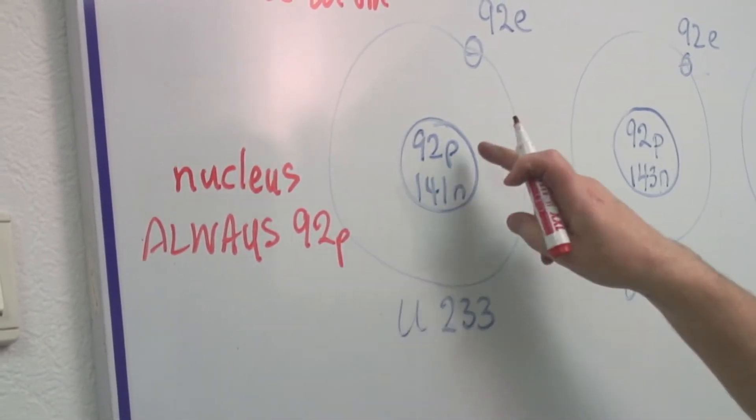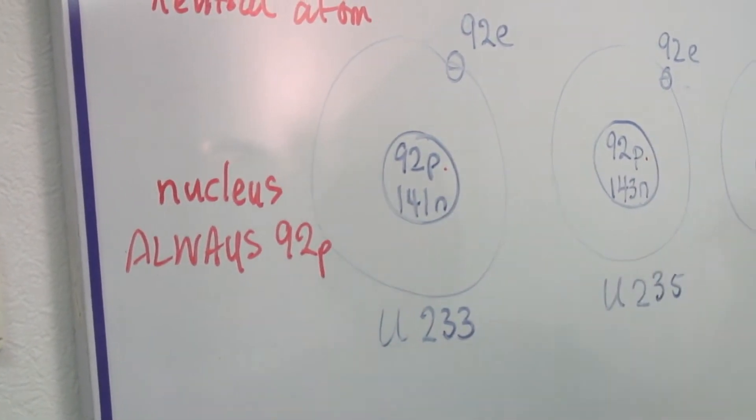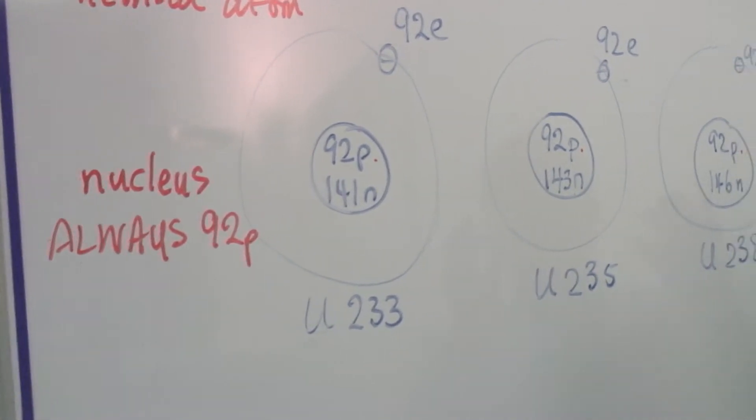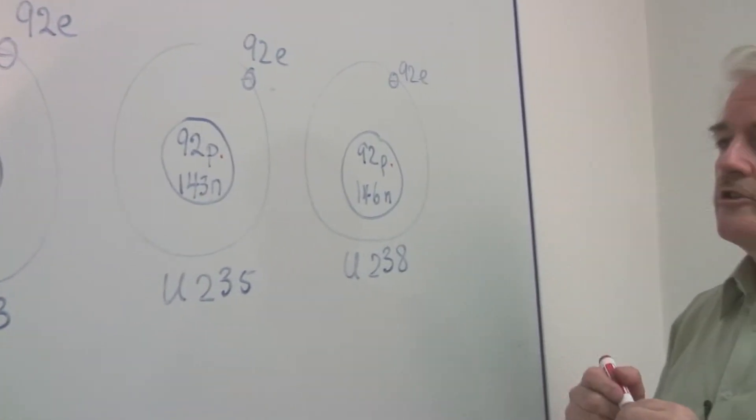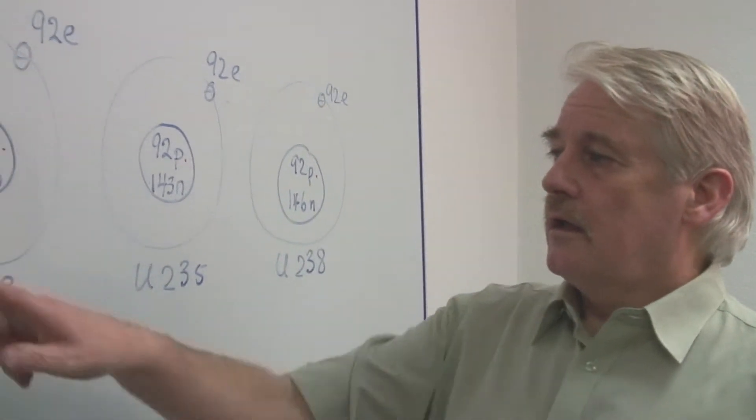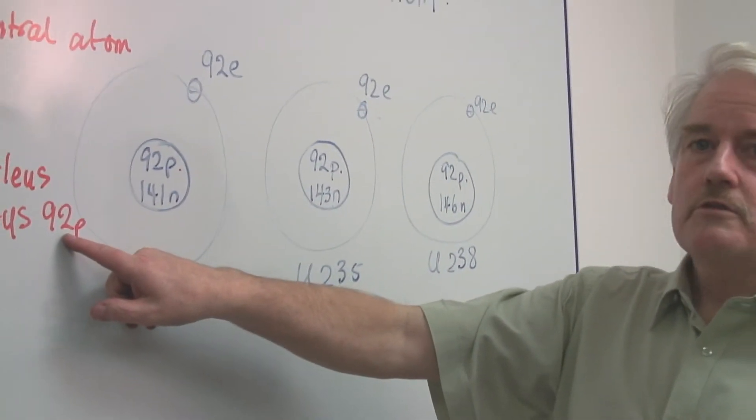Now within the nucleus there is always, always ninety-two protons. Here ninety-two protons in each case. So the atom of uranium is described by saying there are ninety-two protons in the nucleus.